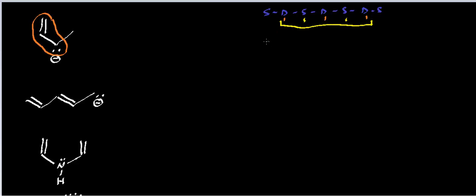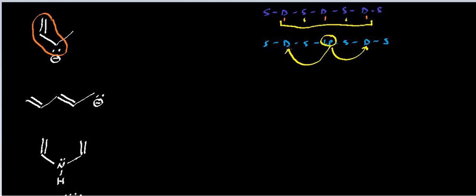Another rule you can follow is if you have a single, double, single — let's throw a lone pair in there — single, double, single. Essentially, when you have the pattern double, single, lone pair, single, double, this lone pair is in resonance with the pi electrons in that double bond, and it's also in resonance with the pi electrons in the double bond on the other side. If you haven't learned that trick yet, we'll go through it in these examples.